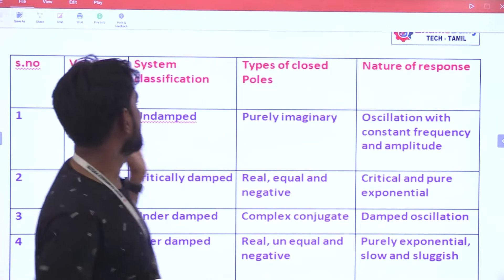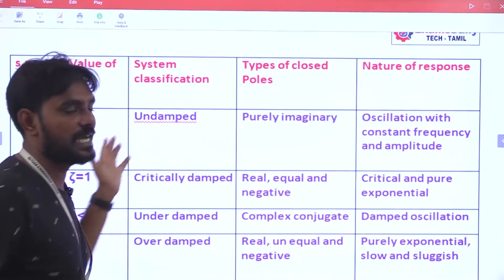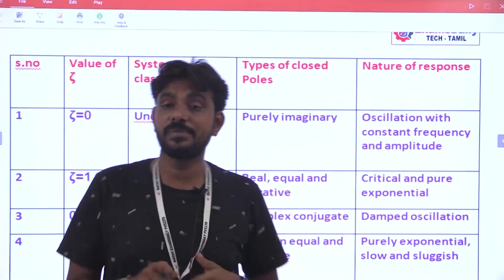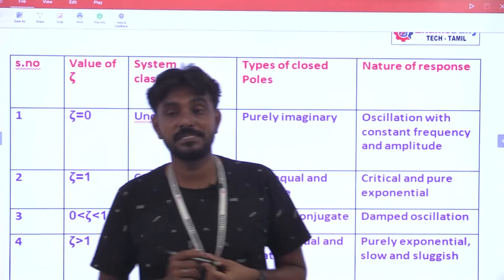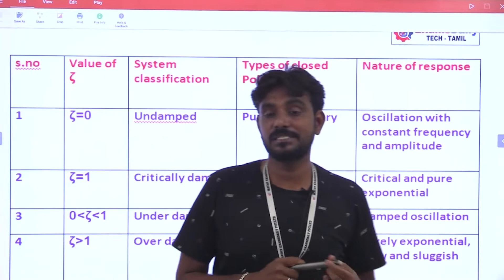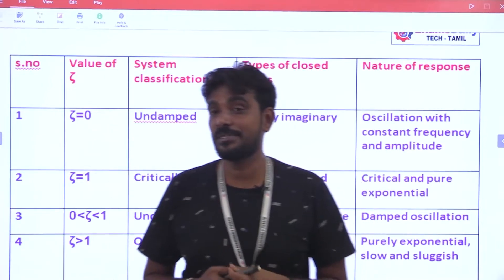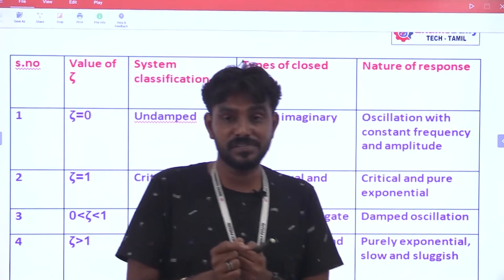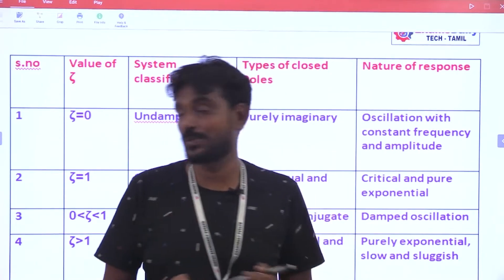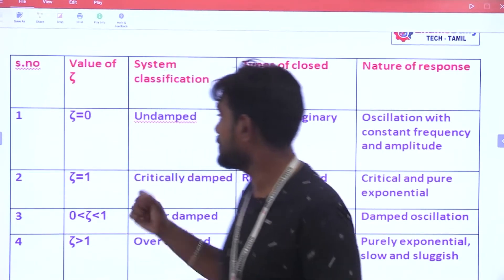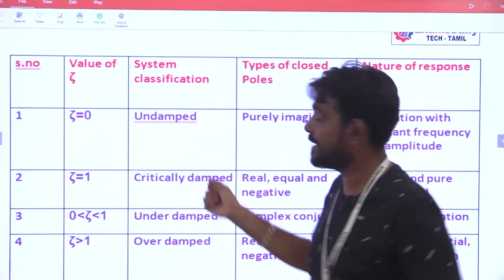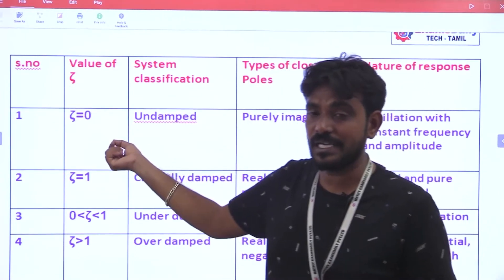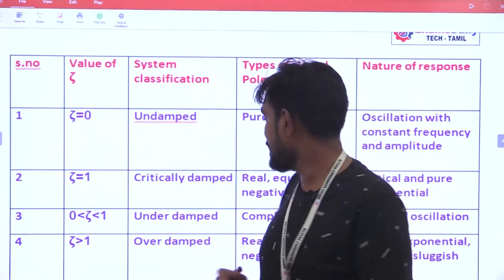When you look at Damping Ratio, the system can be classified as undamped, underdamped, overdamped, or critically damped. Using a given transfer function, we can determine the Damping Ratio.